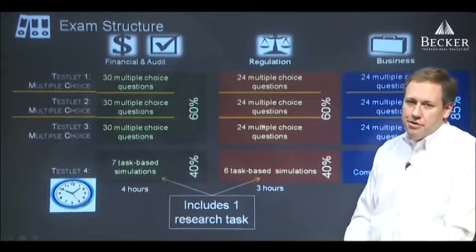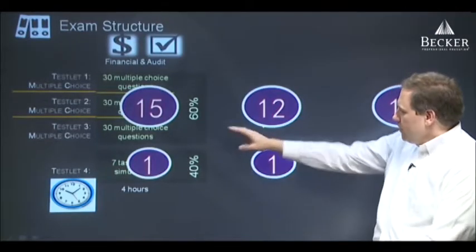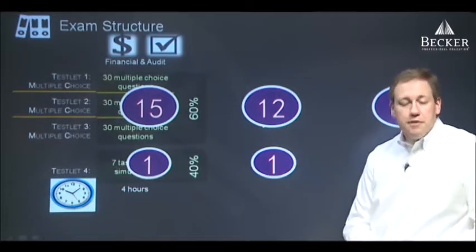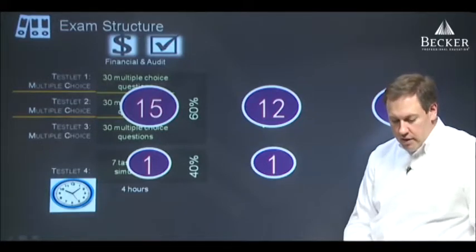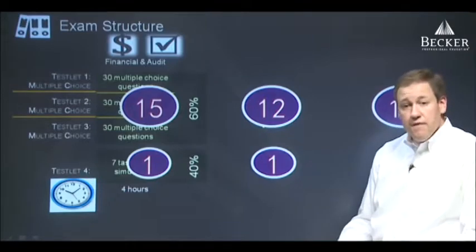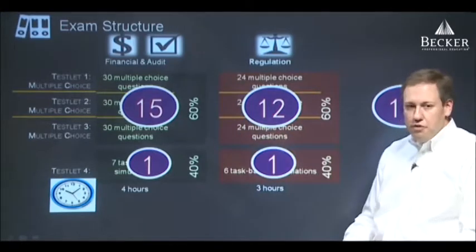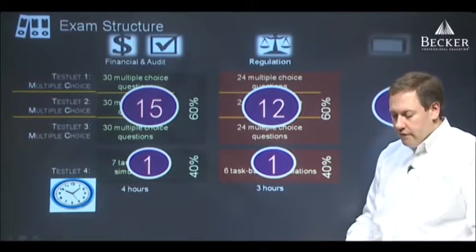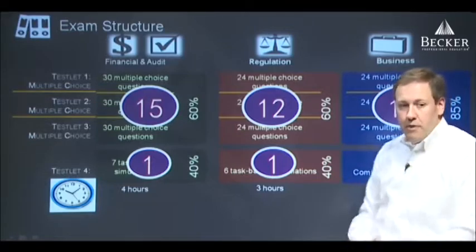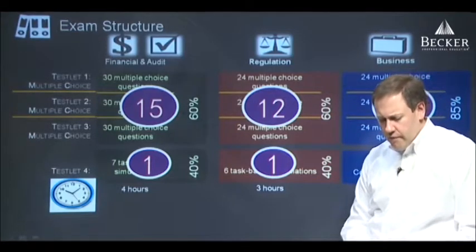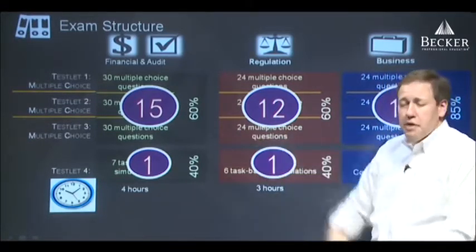There's one other thing I really want to mention, and it's less talked about in the CPA exam. One-sixth of the questions you're going to see during the exam don't count. For financial and audit, that's 15 of the multiple choice and one simulation. For regulation, that's 12 of the 72 multiple choice and one simulation. And for business, that's 12 multiple choice and one of the written communication questions. These are pre-test questions — a technique used in standardized tests to try out brand new questions, or to retest questions that have been found to be statistically invalid.